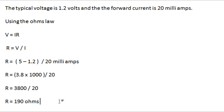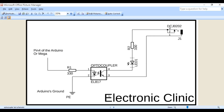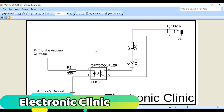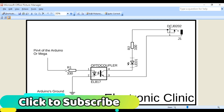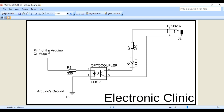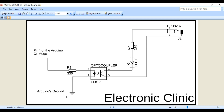Let's first use this optocoupler to control an LED. Once we understand the whole process, we will then control a DC motor. This is the circuit diagram designed in KiCad Eagle. On the left side, a 330 ohm resistor is connected with pin number 1 of the optocoupler, and the other end is connected with pin 4 of the Arduino. Pin number 2 of the optocoupler is connected with Arduino ground. We will be using a separate 5-volt DC power supply — a 330 ohm resistor is connected with the LED, the LED cathode side is connected with pin 4 of the optocoupler, and pin 3 is connected with ground. The left side has no physical connection with the right side, providing perfect isolation — the only medium of communication is light.